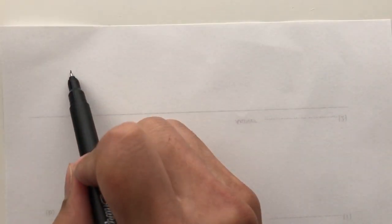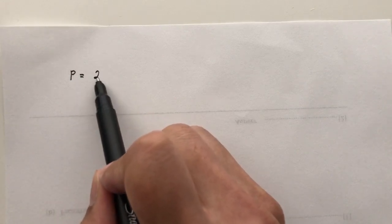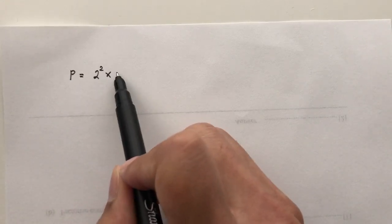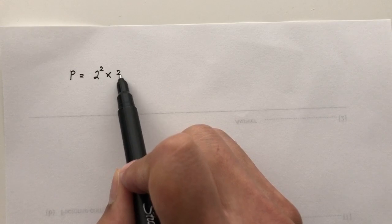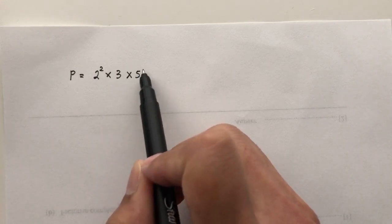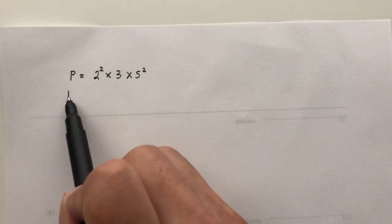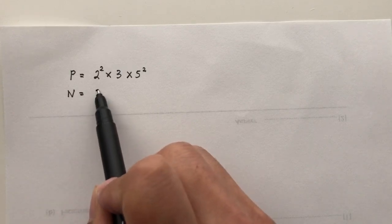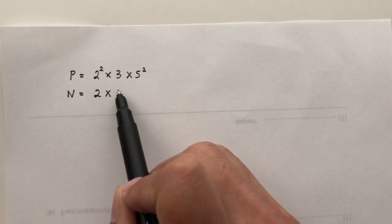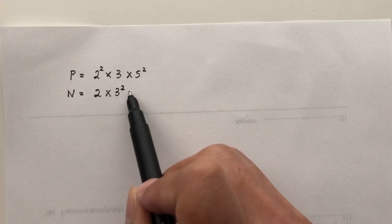To understand how to find the answers, we first have to know how do we find HCF or LCM, right? For example, let's say I have a number P which is equal to 2 power 2 times 3 times 5 power 2. Let's say I have a number N which is equal to 2 times 3 power 2 times 7.